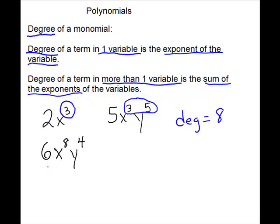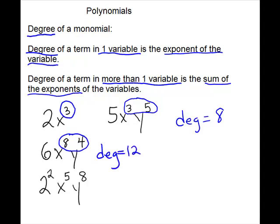How about this term: 6x to the 8th y to the 4th? It has more than one kind of variable, so you add the exponents: 8 plus 4, and our degree equals 12. One more problem, and this one is a little tricky to find the degree. The degree only comes from the exponents on the variables — the 2 squared you could work out, but make sure that you only take the sum from the variables. So our degree will be 5 plus 8, which is 13.